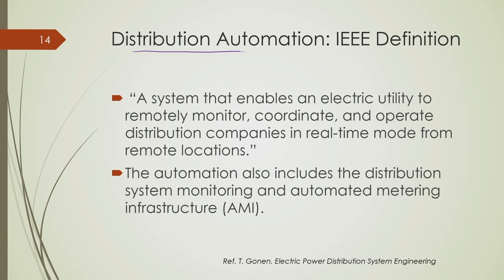Let us start with distribution automation. Although there is an IEEE standardized definition mentioned in the Gonen book, there is no strictly formal definition. IEEE and its task force has defined it as a system that enables an electric utility to remotely monitor, coordinate, and operate distribution components in real-time mode from remote locations. This automation also includes distribution system monitoring and automated metering infrastructure. These building blocks are not isolated; their functionalities overlap with each other.